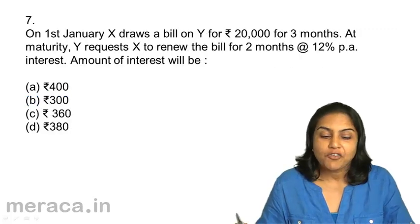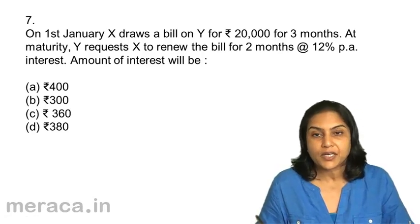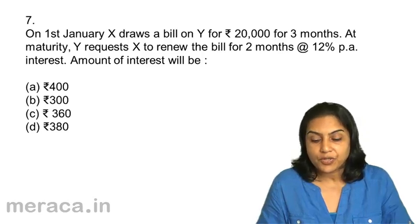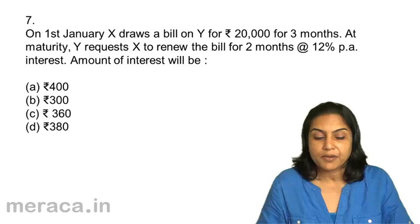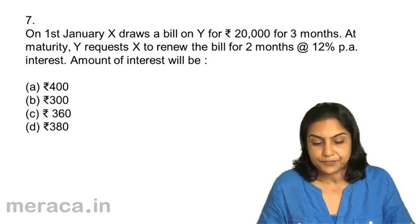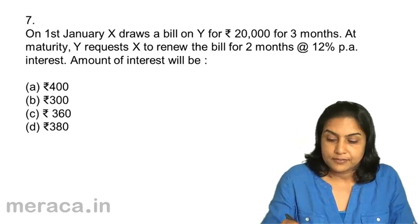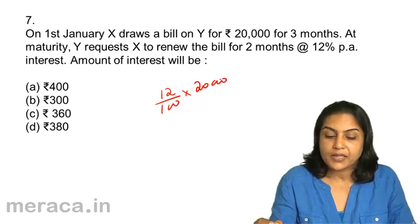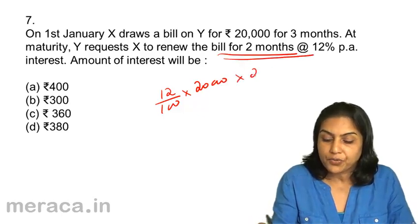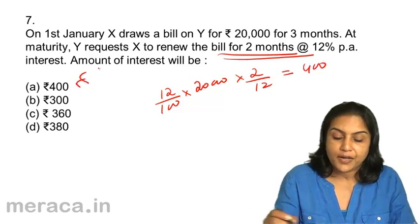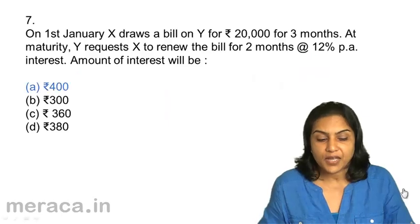Question 7: On 1st January, X draws a bill on Y for Rs. 20,000 for 3 months. At maturity, Y requests X to renew the bill for 2 months at 12% interest. The amount of interest would be: a. 400, b. 300, c. 360, d. 380. Answer: 12% on Rs. 20,000 for 2 months equals Rs. 400. Correct answer is 7a.